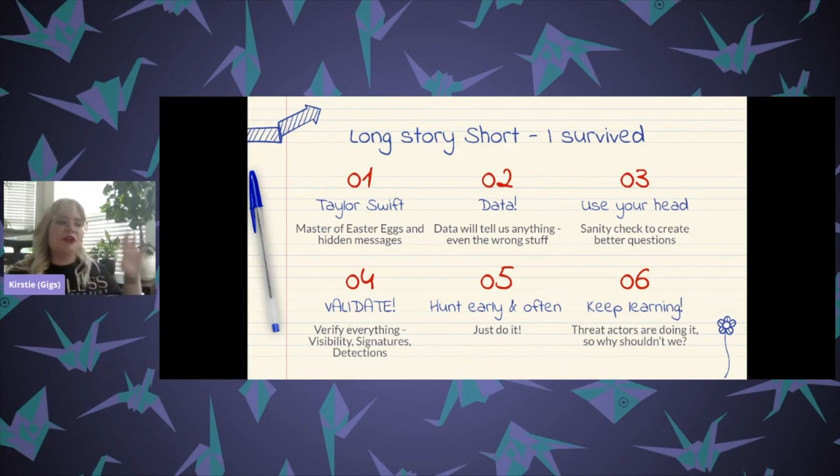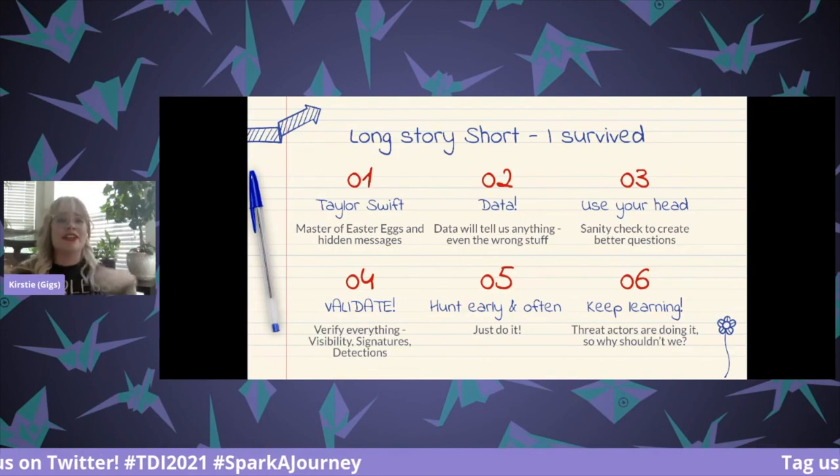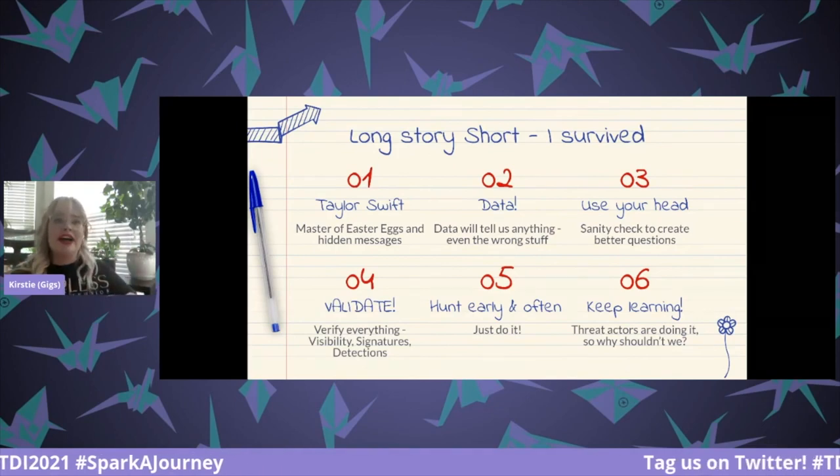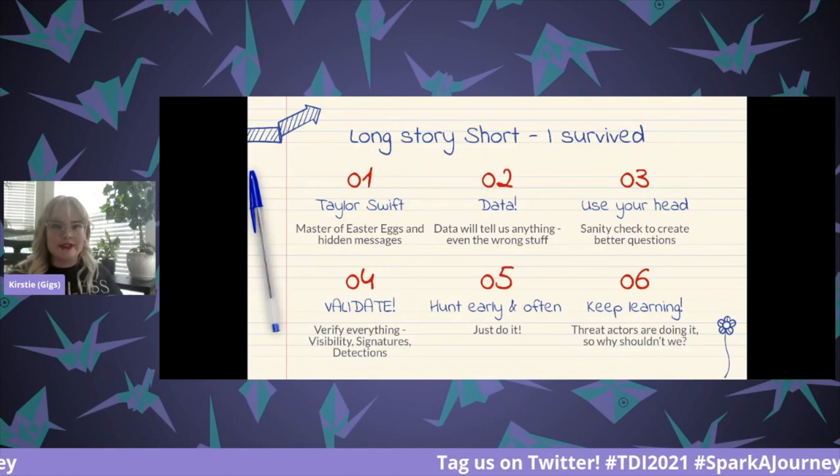And after you get through this cycle, make sure that you are able to validate the signatures, validate the visibility, validate your detections, making sure that you're constantly having this feedback loop. Hunt early, hunt often, just do it. Honestly, it's going to be so much fun for you and you're going to be a lot better as a detection writer, as well as an analyst specifically.